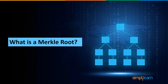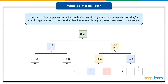Now let's explore what is a Merkle root. A Merkle root is a simple mathematical method for confirming the facts on a Merkle tree. They are used in cryptocurrency to ensure that data blocks sent through a peer-to-peer network are whole, undamaged, and unaltered. Merkle roots play a crucial role in the computation required to keep cryptocurrencies like Bitcoin and Ether running.